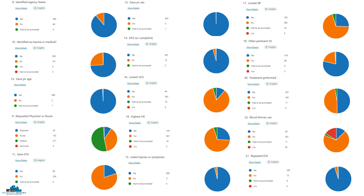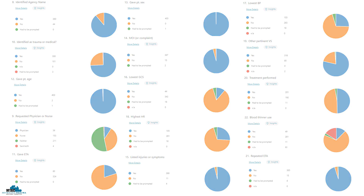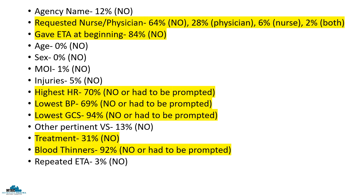Looking a little bit closer at specific areas — again, a good number of our areas were decent, but there were also a few opportunities for improvement. At CMC, LCH, Novant Presbyterian, and Cleveland, it is requested that EMS ask for a physician for high-priority calls. This often does not happen, as you can see. We also recommend that you start off with ETA in addition to ending with it — that way it's heard twice, leading to fewer requests to repeat your ETA later, which is probably one of the most frequently asked questions by the receiving hospitals.